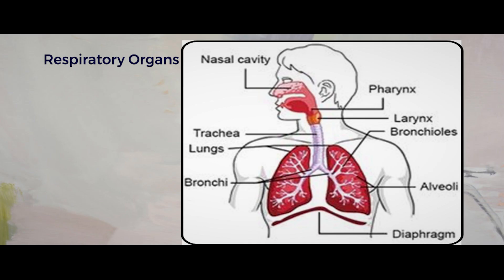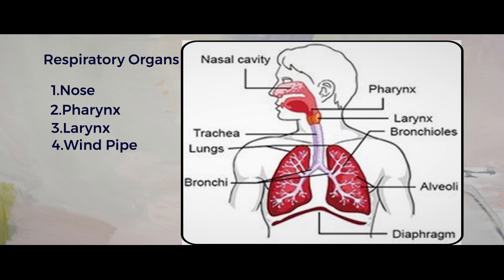There are many respiratory organs which help you undergo respiration. The first is the nose, because this is where the whole process starts — breathing in and out happens through the nose. Then you have your pharynx, which is an empty cavity. Below the pharynx you have your lungs. After that, you have the windpipe, a very important part of the respiratory system, also known as the trachea.